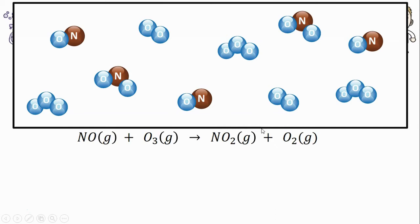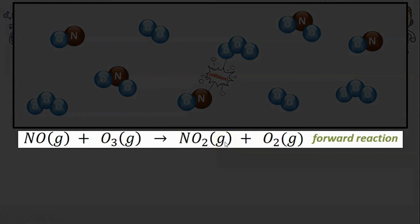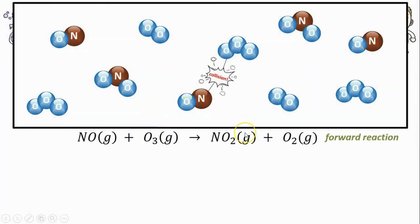Now inside this container, the true visual here is that all of these particles are moving around. And if they're all moving, then sometimes an NO collides with an O3 and the NO and O3 will produce the products NO2 and O2. That's happening. That is also called a forward reaction because it's written in this typical left to right forward direction.